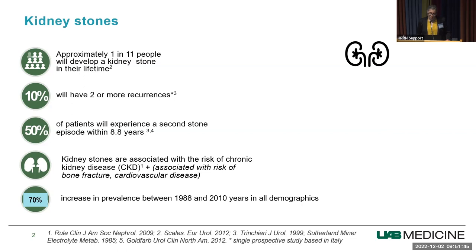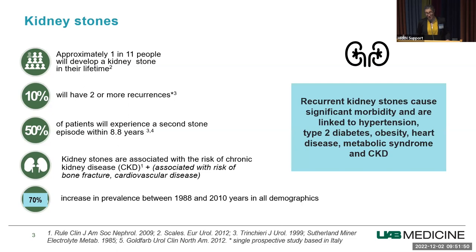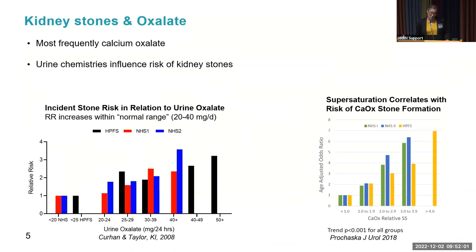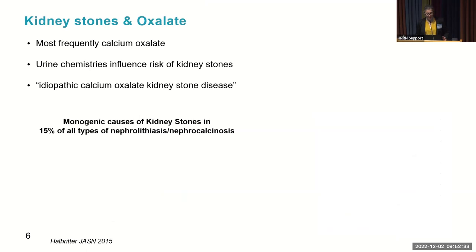The most frequent composition for kidney stones is calcium oxalate, and we know urine chemistry influences the risk. Studies show that incident stone risk increases in relationship to the concentration of oxalate in the urine, even within the normal range of 20 to 40 milligrams per day. Supersaturation of calcium oxalate has also been linked with stone formation risk. 15% of all kidney stones have been linked to a monogenic cause, including calcium phosphate and cysteine stones. For the majority of patients, the cause is labeled idiopathic, resulting in only symptomatic treatment.